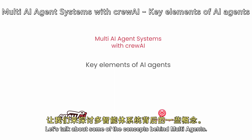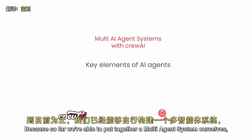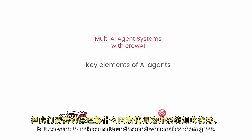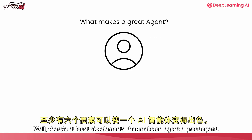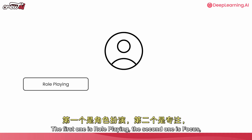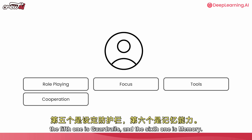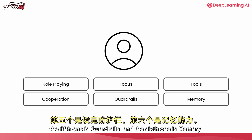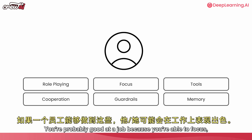Let's talk about some of the concepts behind multi-agents. We've been able to put together a multi-agent system ourselves, but we want to make sure to understand what makes them great. There are at least six elements that make an agent a great agent: the first one is role playing, the second one is focus, the third one is tools, the fourth one is cooperation, the fifth one is guardrails, and the sixth one is memory.